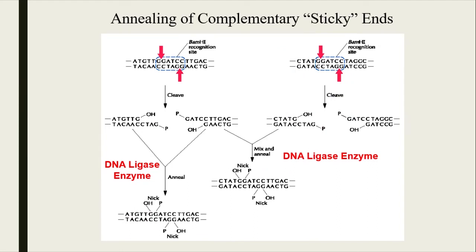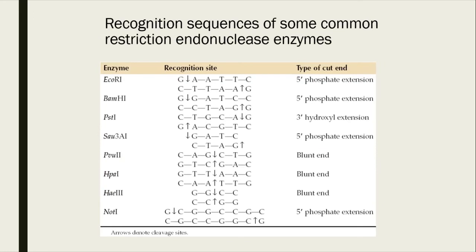To stitch the sticky ends together, there is an enzyme called ligase — it does the ligation. Ligase will help with stitching back these ends. I have this in my lab every day. Some of the common restriction endonucleases — like EcoRI, one of the more common ones — these recognition sites are widely available information; there's really no reason to memorize them. Some cut for sticky ends, and some cut for blunt ends where there is no overhang.